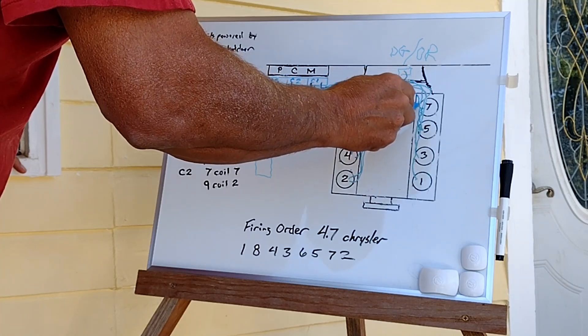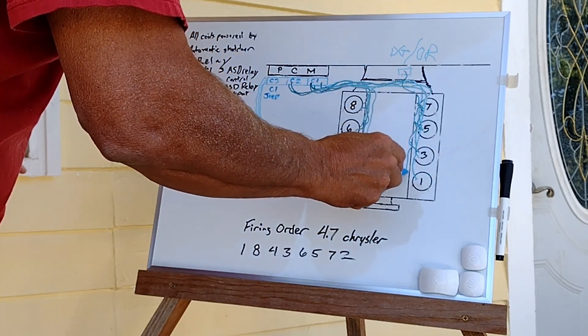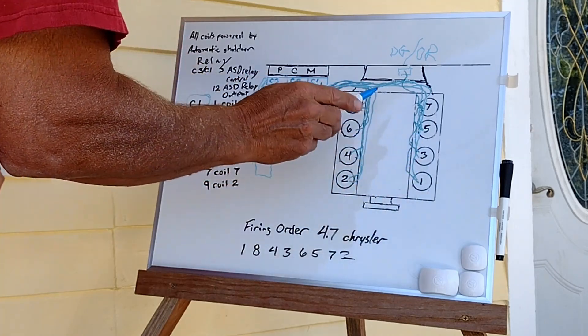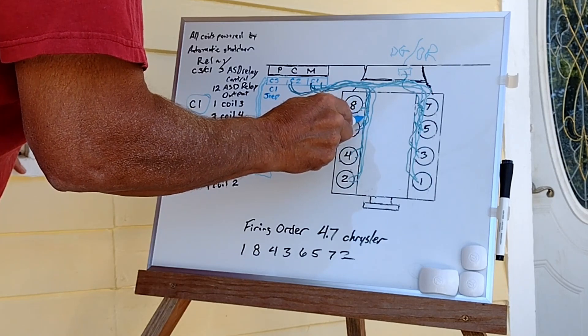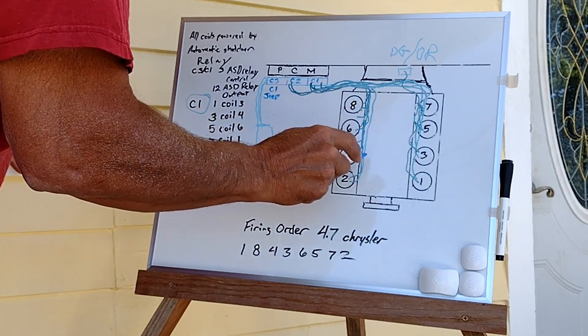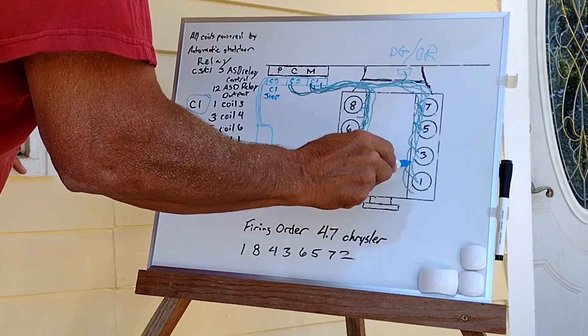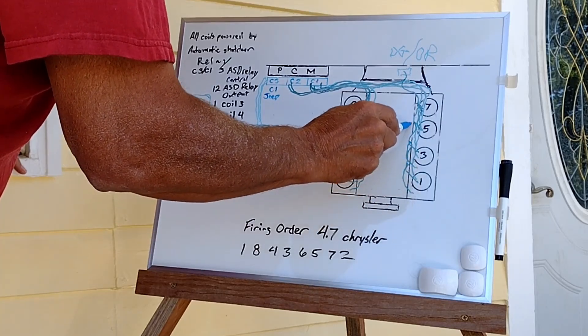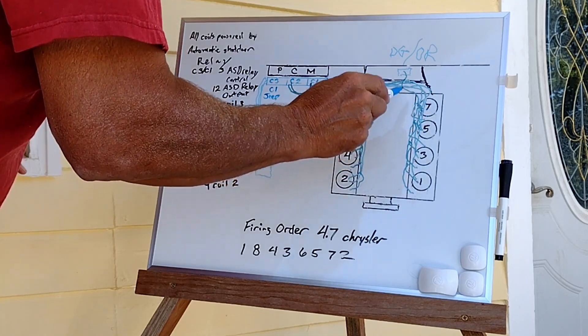Then you're going to split, and you're going to come over here, and you're going to go to seven, five, three, and one. But you're not done. In between all of these, leave another tail sticking out to provide your power for each of your injectors.